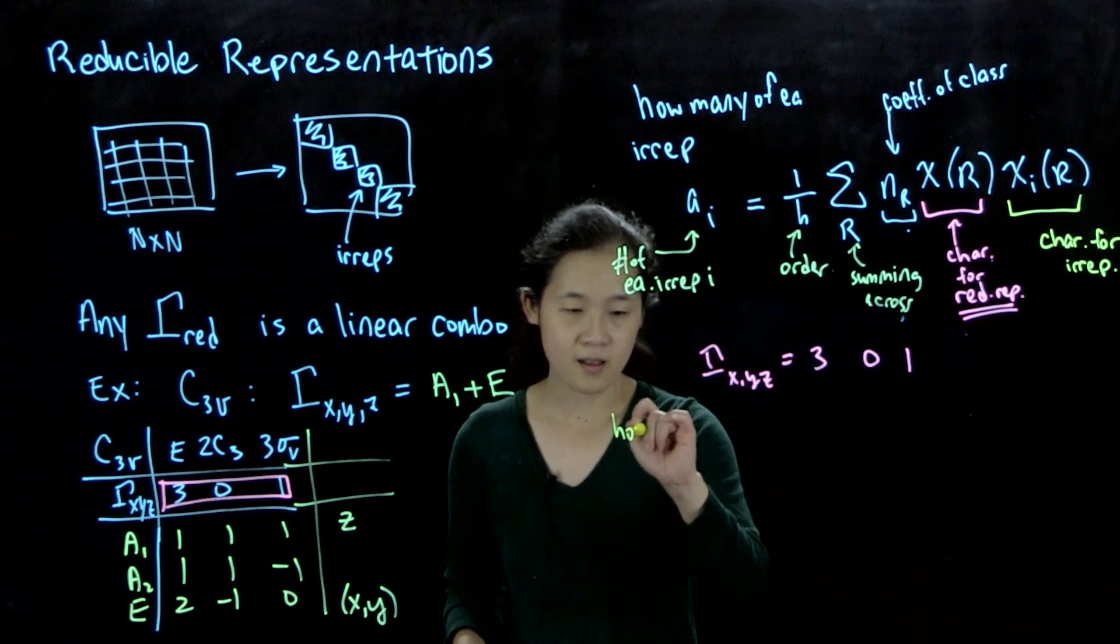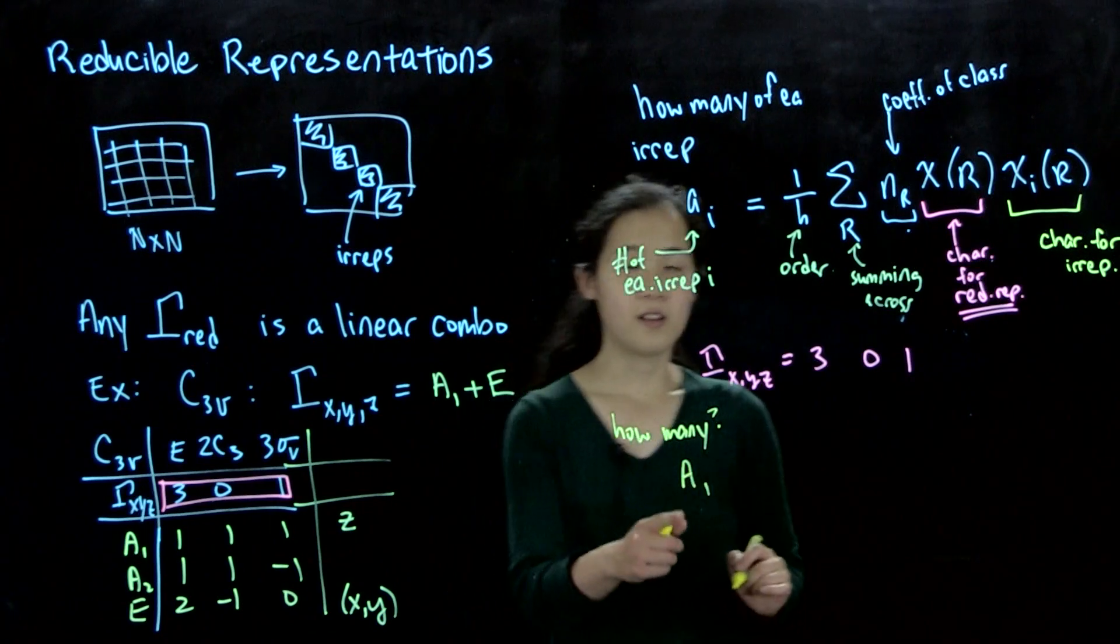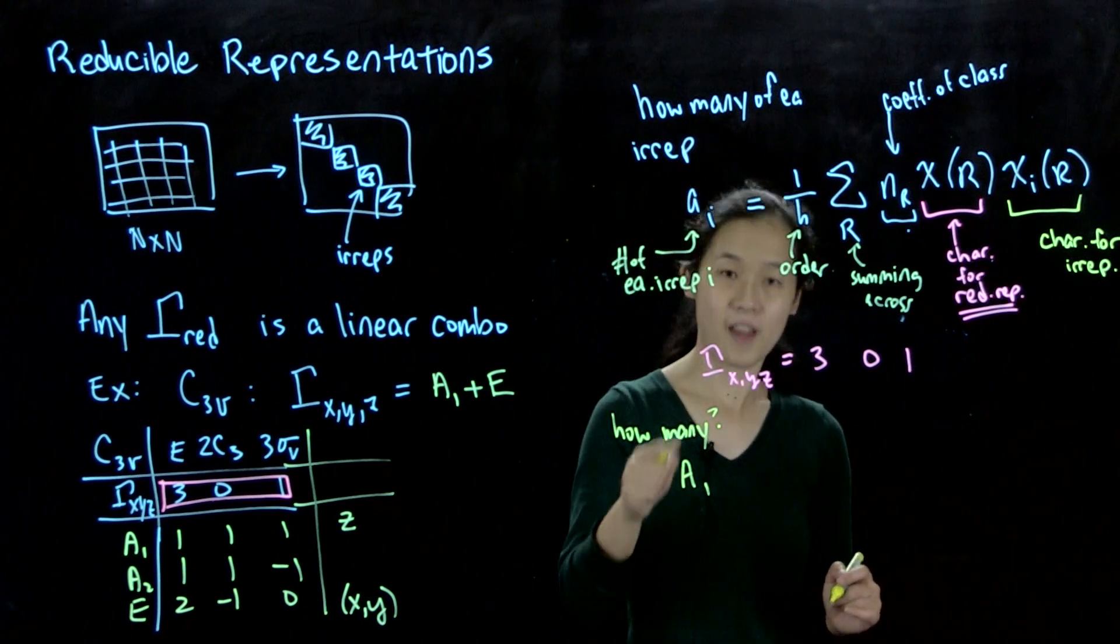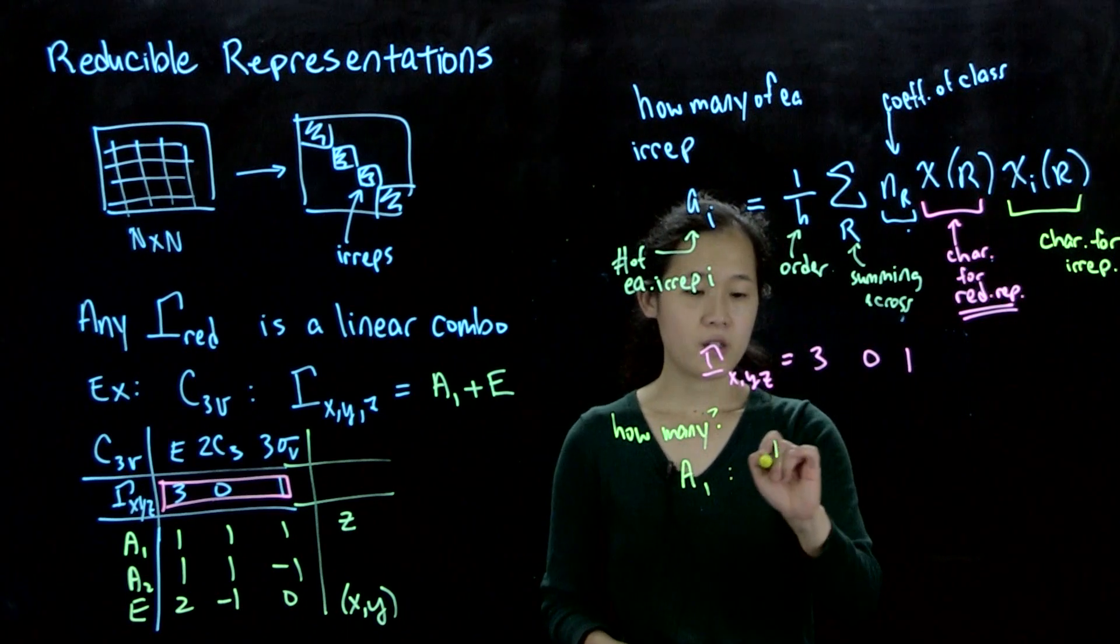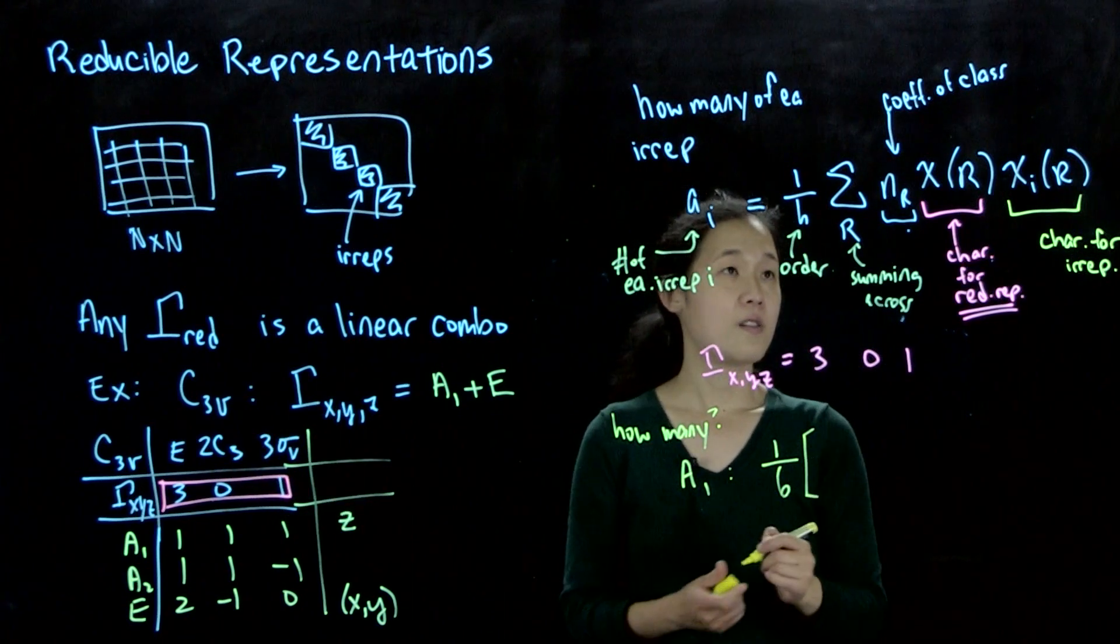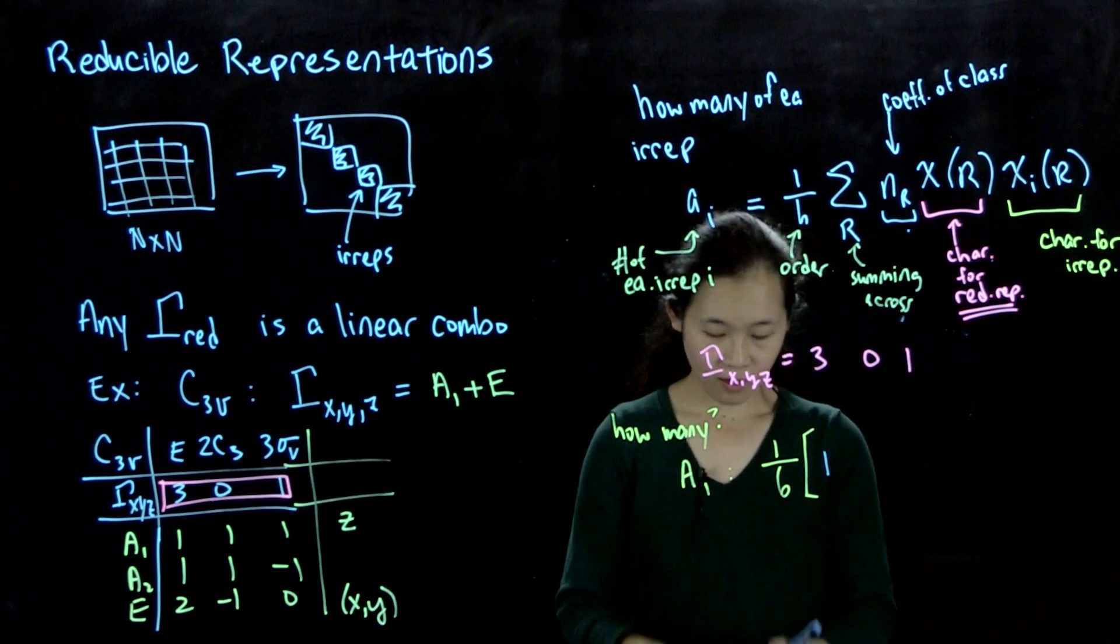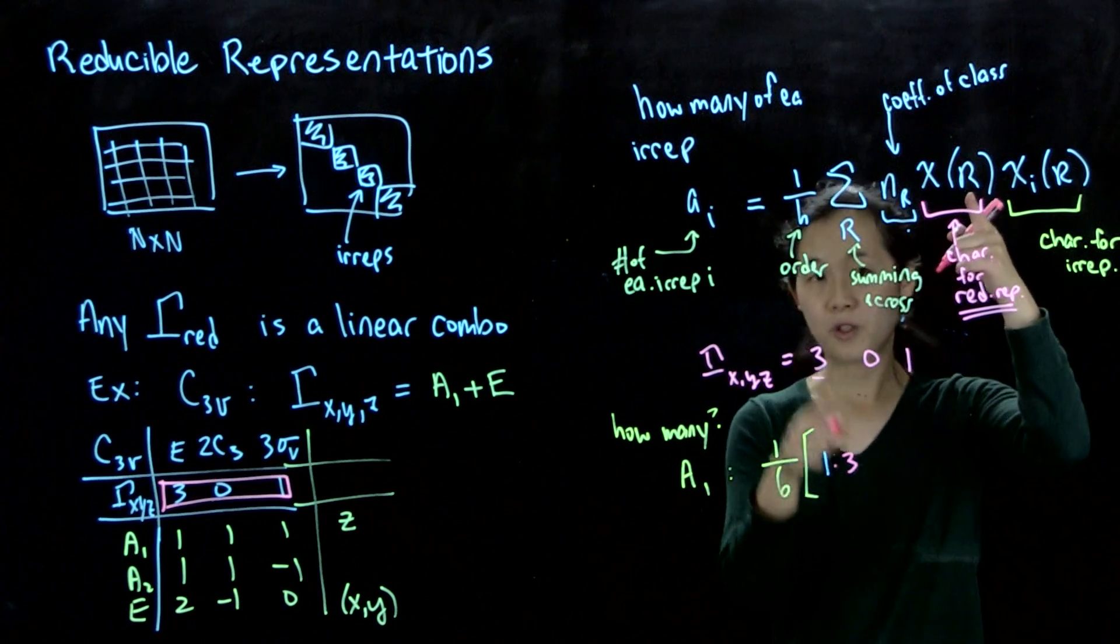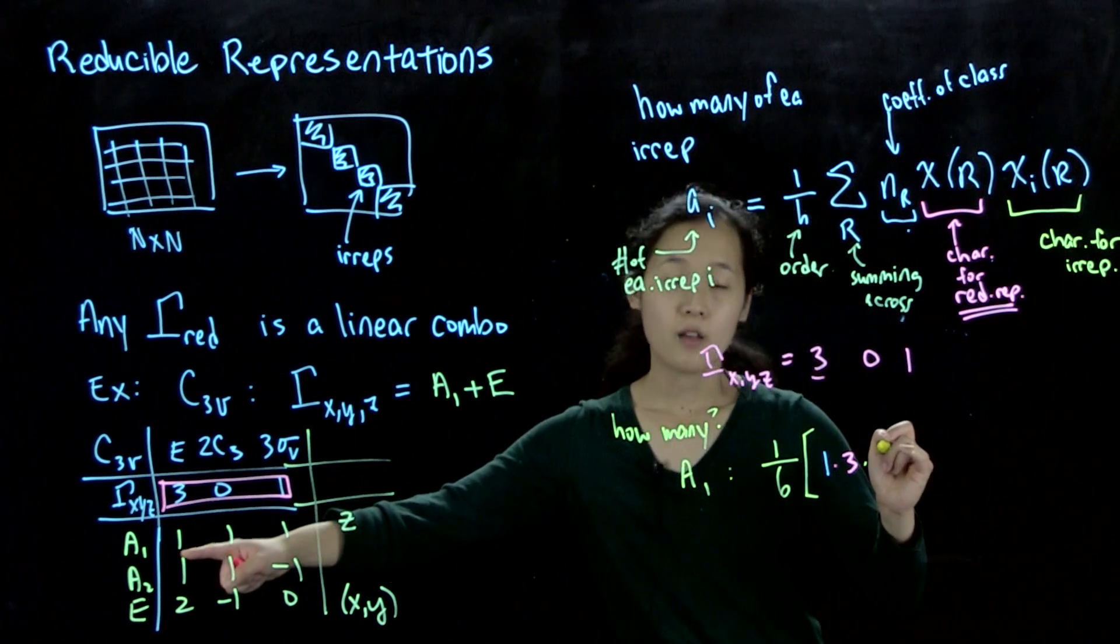First question is, how many a1s? So our i is the a1 irrep, and we're counting a, which is the number of a1s within this reducible representation. This is going to be equal to 1 over 6, which is the order of C3V, 6 operations. Then we're going to sum across. For the coefficient, E is 1. So it's going to be 1, and then we multiply that by 3, which is the character of E of the reducible representation. And then our last one is going to be the character under E of the a1 irreducible representation.